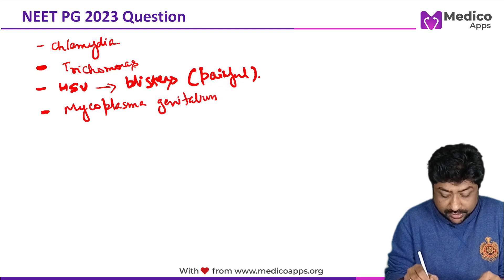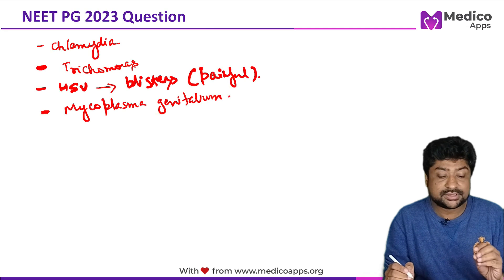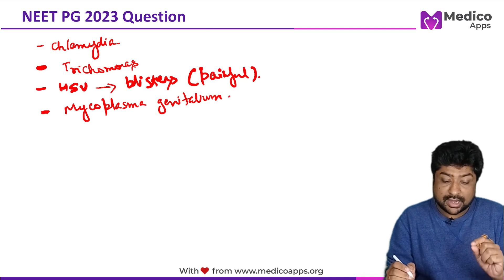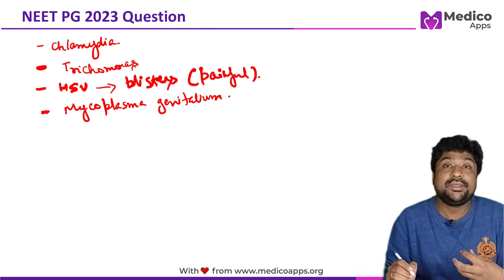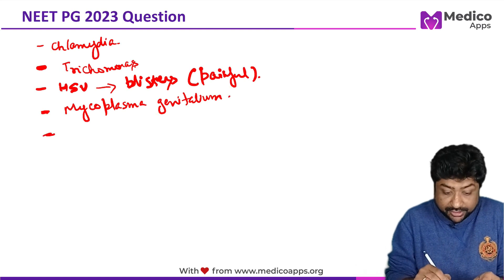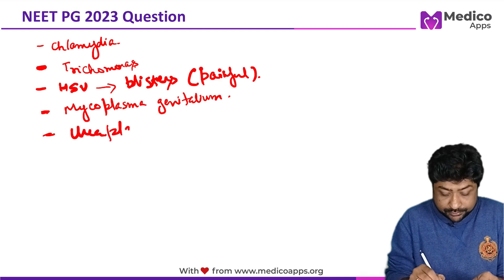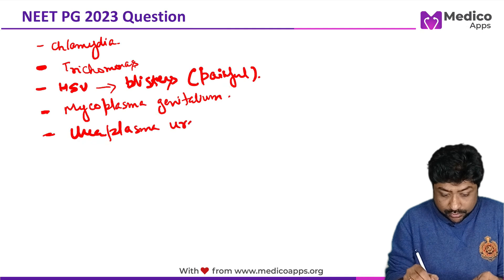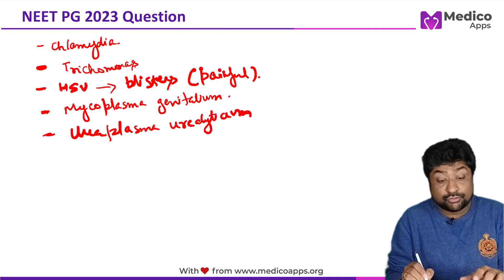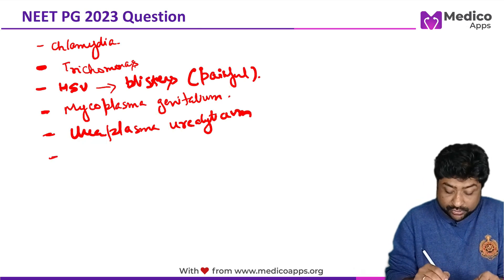The next important differential diagnosis is Mycoplasma genitalium, which is another very similar infection and is now an increasing cause of urethritis in males. The next is Ureaplasma urealyticum, which is part of the normal flora, but in some cases it can also cause urethritis.